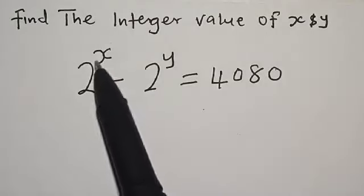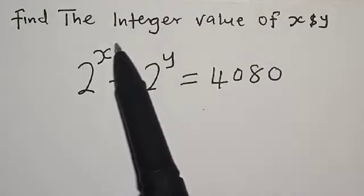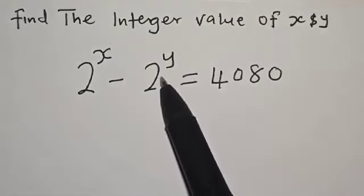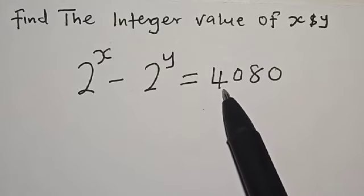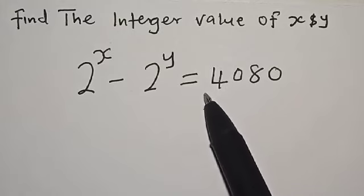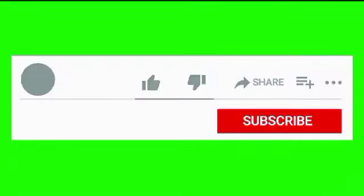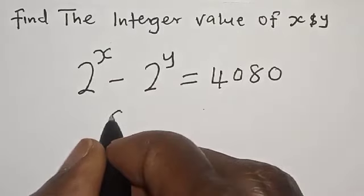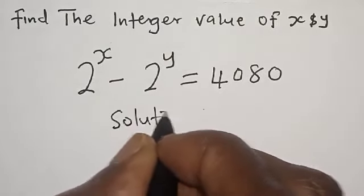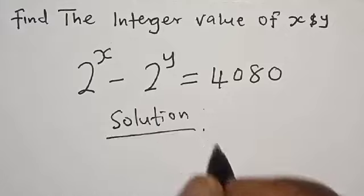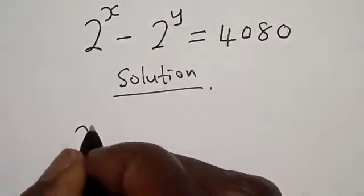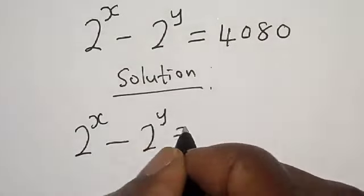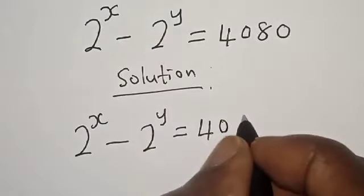Welcome to Math Gist. In this class, we want to find the integer values of x and y, where 2 raised to the power x minus 2 raised to the power y is equal to 4080. Please like, share, comment, and subscribe. Let's start with the solution. 2 raised to power x minus 2 raised to power y is equal to 4080.